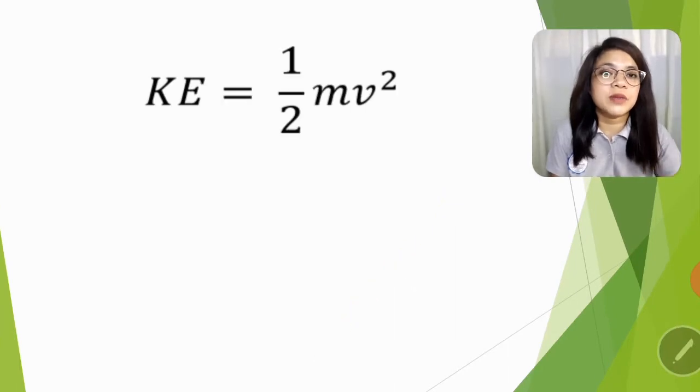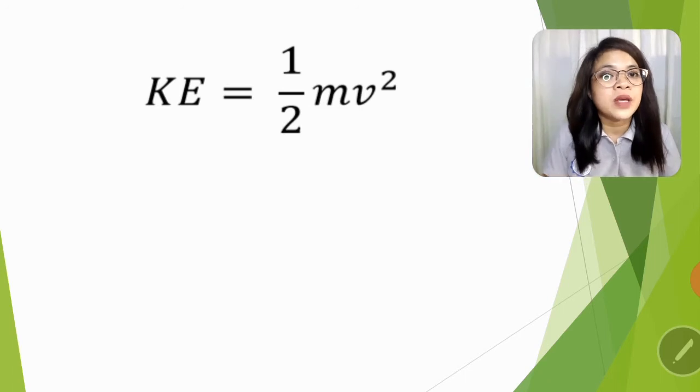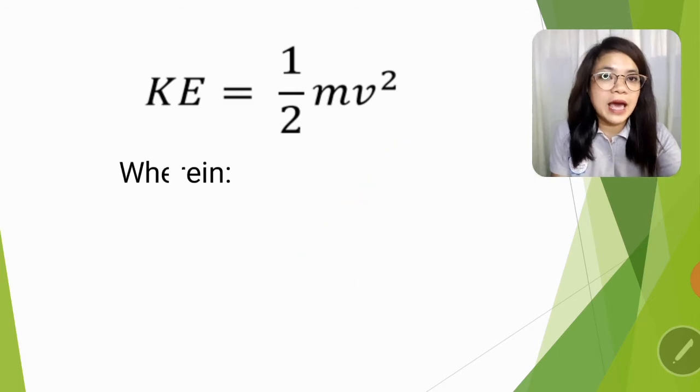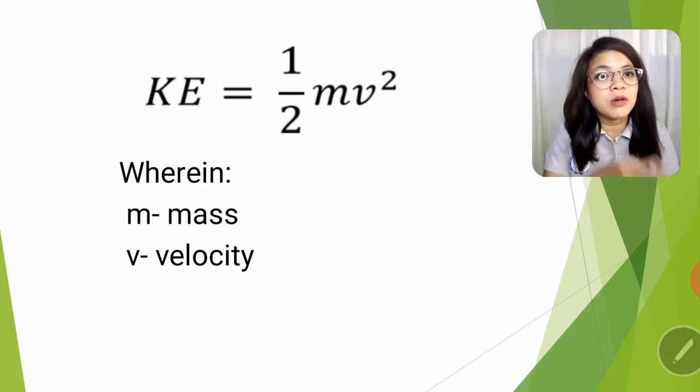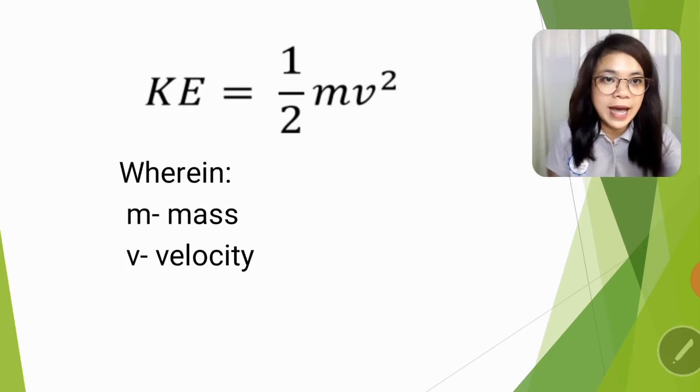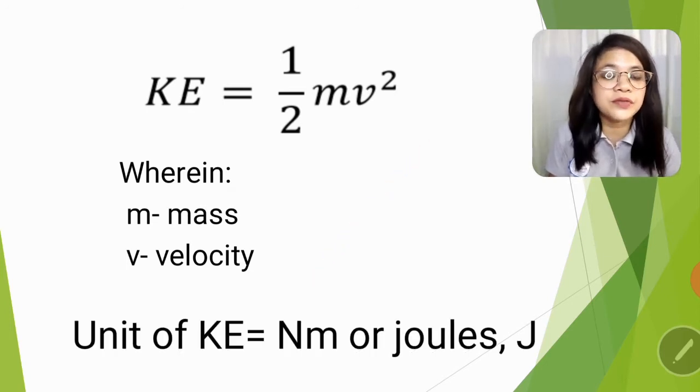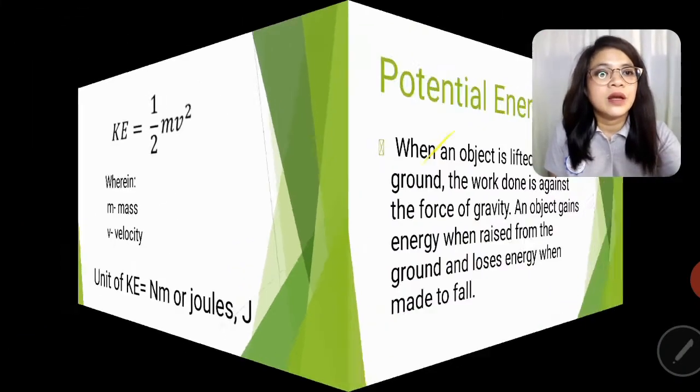We have here the formula in getting the kinetic energy of a body or of an object. KE is equal to one-half mv squared, wherein M stands for mass, V stands for velocity. So yung velocity kailangan nyo muna i-multiply to itself bago i-multiply kay mass, then saka siya i-divide sa 2, or i-times sa 0.5 kasi 0.5 is equivalent to one-half. The unit for KE or kinetic energy is Newton meter or joules, or just a capital letter J.